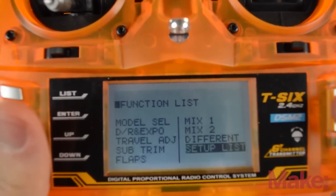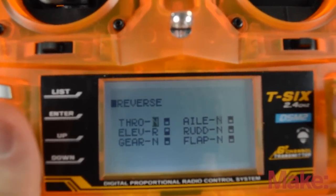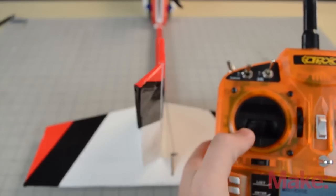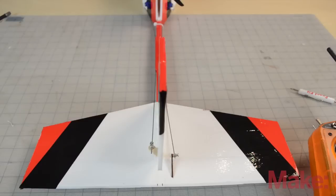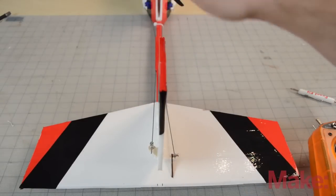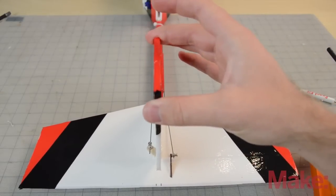We're going to scroll down to setup list. Go to reverse. We're going to find rudder and reverse it. It should match your stick. Just make sure your rudder is straight when it's in neutral and that's just bending the push rod to make sure that it is all positioned properly. That'll make sure that you're not crashing when you take off.